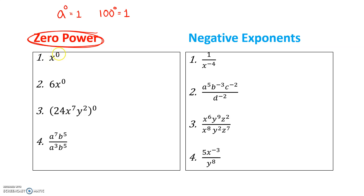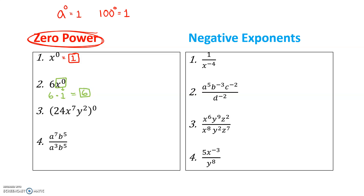For the first one, we have x to the zero power. Anything to the zero power is simply one — that simplifies to one. Be careful with number two: we have to understand who that exponent really belongs to. In this case, the zero only belongs to the x. So this is really saying 6 times x to the zero power. X to the zero power turns into one, so we have 6 times 1, which is just 6.